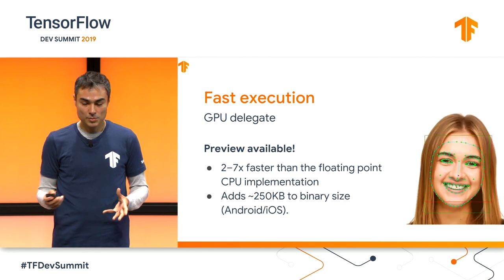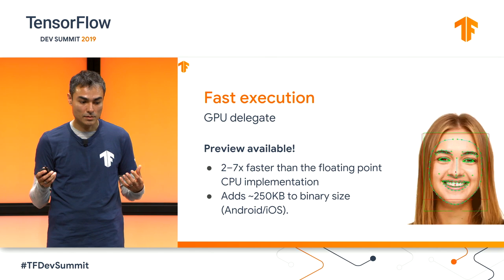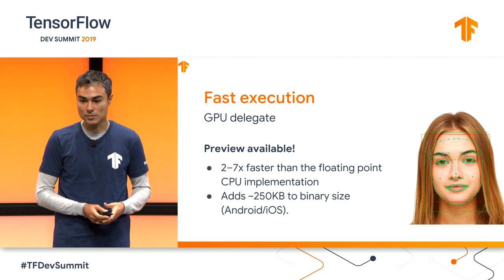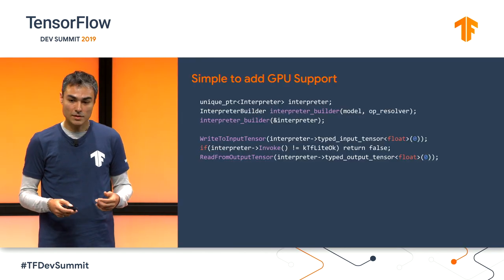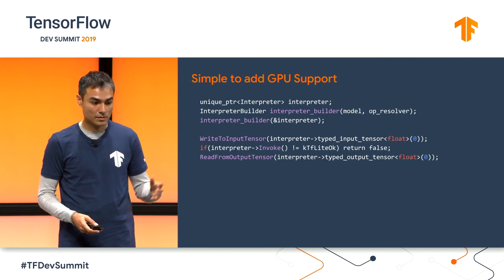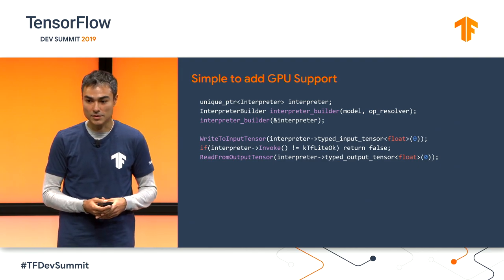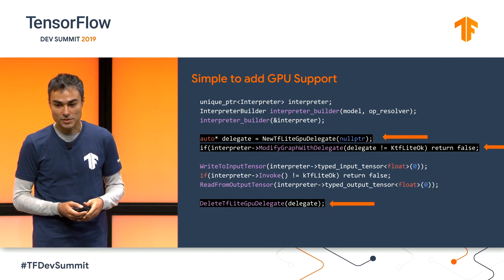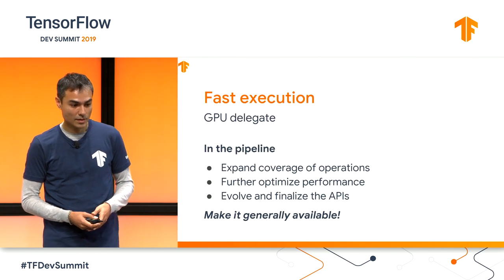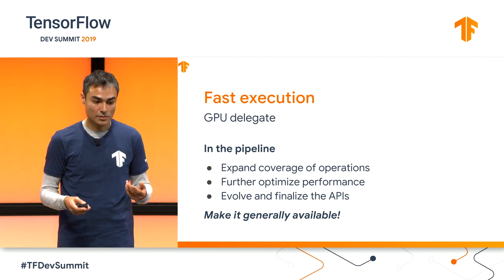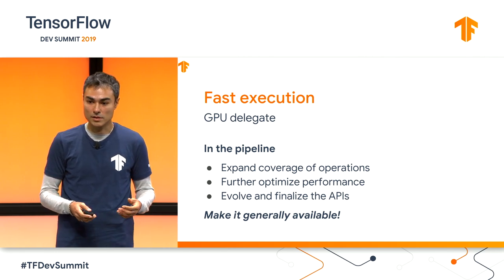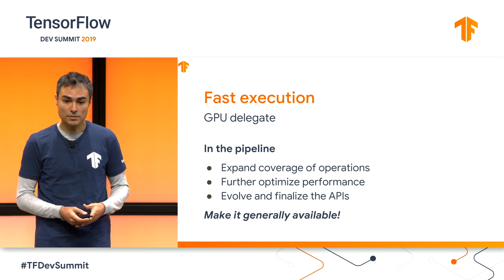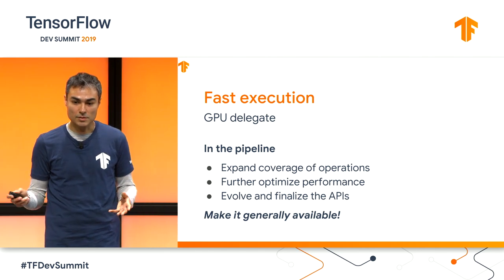The next delegate is the GPU delegate. We see very nice performance improvements — 2.27x compared to floating point in CPU, at the cost of a relatively small binary size increase. To enable the GPU delegate, just like any other delegate, you simply instantiate it and pass it to the interpreter — that's it. In the pipeline, we want to add more ops. Right now most of the ops in the GPU delegate are covering convolutional networks, but we want to cover recurrent networks as well. We want to improve performance even further and finalize the API to make it generally available, not just a developer preview.